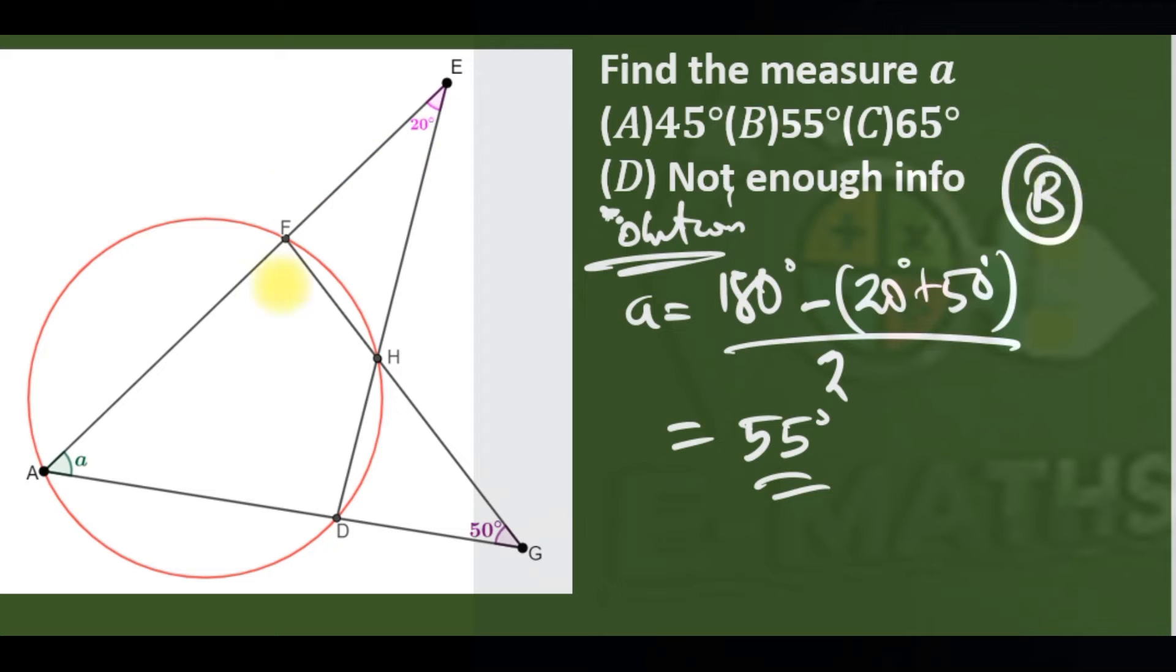Whenever you have a cyclic quadrilateral that extends to form a triangle, the angle here and here, if you want to get the common angle between triangle AED and triangle AGF, that common angle is just 180 degrees minus the sum of the angles here, over 2.